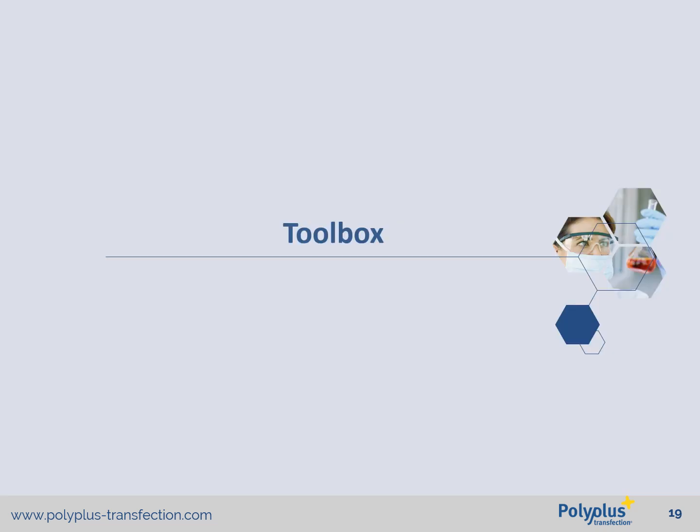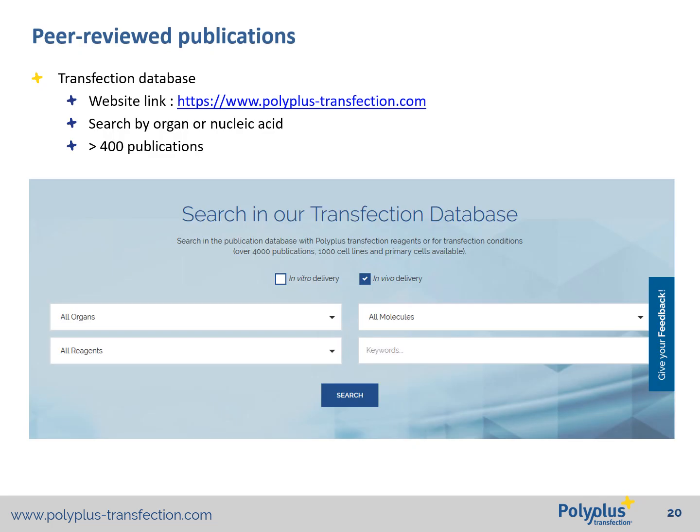You've seen what can be done using our in vivo transfection reagent. Now we're on to the interesting bit — getting you started with your in vivo experiments. We have several tools available. First and foremost, our transfection database, which you can easily access by going on the Polyplus Transfection website. You can search through our publication database by organ and nucleic acid delivered, and you will find more than 400 in vivo publications available.